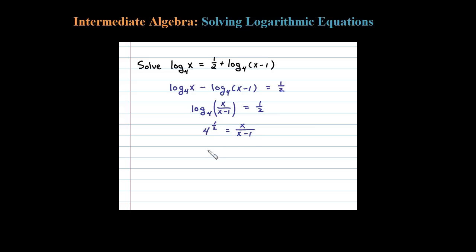The 1/2 power is really square root, so this is the square root of 4 has to equal x over x minus 1. Square root of 4 is just 2, so basically 2 has to equal x over x minus 1.